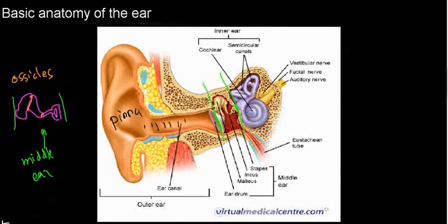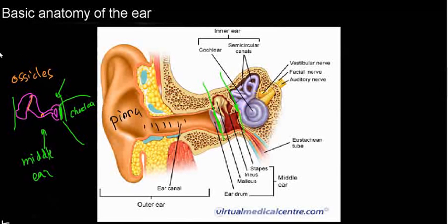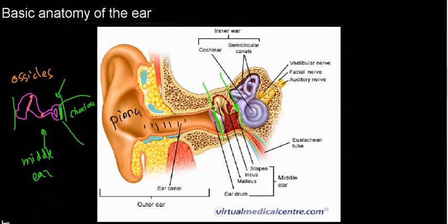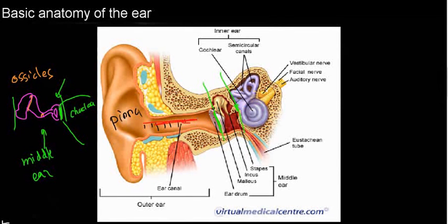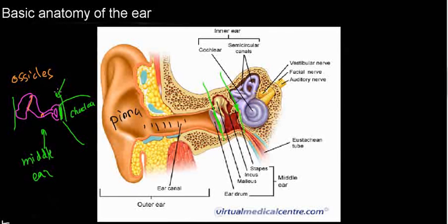We're moving into the inner ear, which is where hearing is interpreted — specifically in the cochlea. The cochlea has a contact surface with the stapes. The outer ear ends at the eardrum, the middle ear is the region between the eardrum and the cochlea, and the stapes has a contact surface with the cochlea.